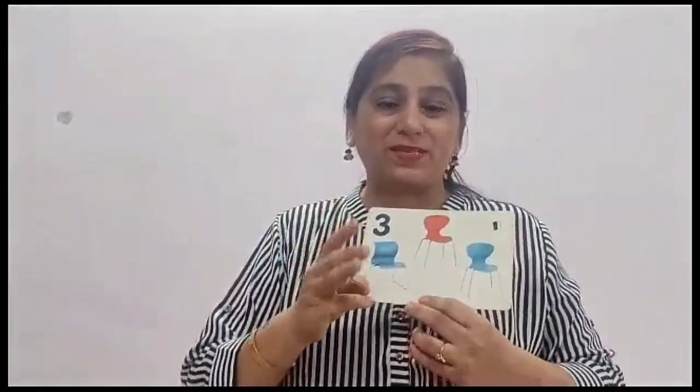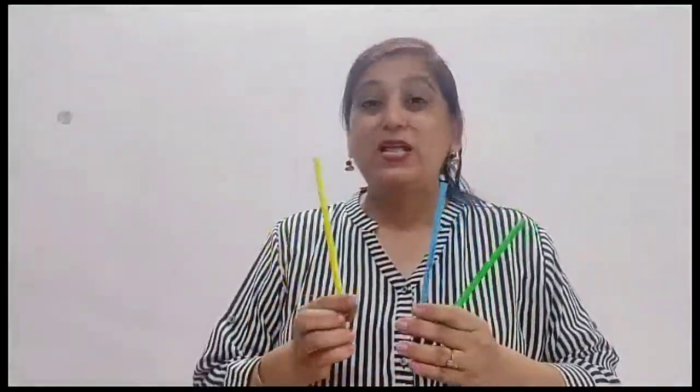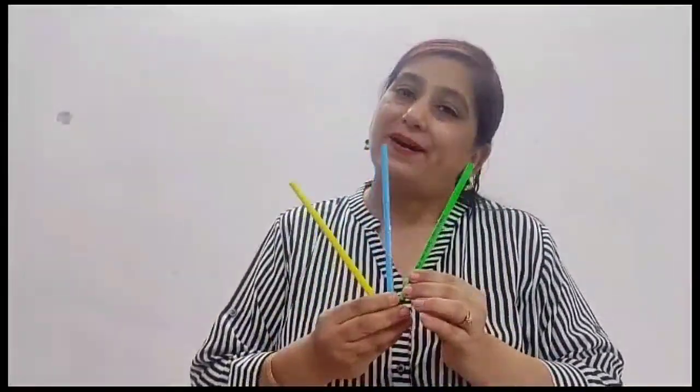Look here — how many objects can we see in this flash card? Number 3 has 3 objects. Let's count: 1 chair, 2 chairs, 3 chairs. Number 3 is a 1-digit number. We will count the pencils: 1 pencil, 2 pencils, and 3 pencils. Whenever we draw 3 objects — 3 pencils, 3 tomatoes, 3 onions, 3 potatoes.